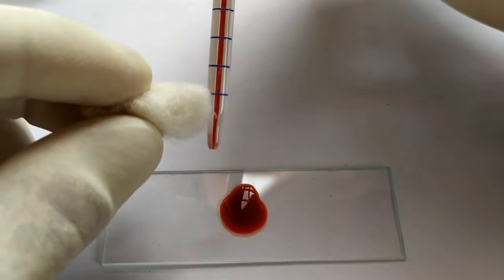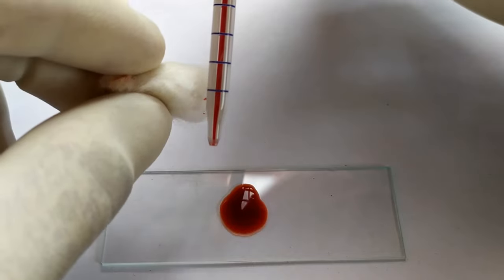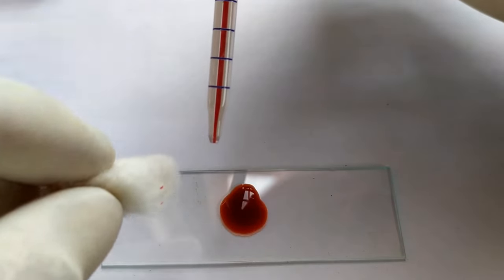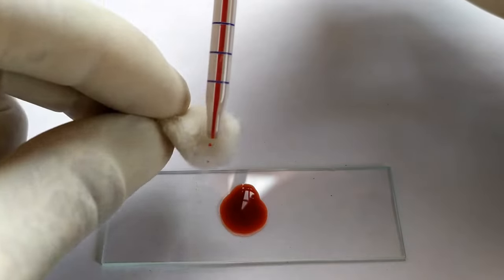Once that's done, carefully clean the excess blood sticking to the outer sides of the tip of the pipette using a cotton soaked in alcohol.